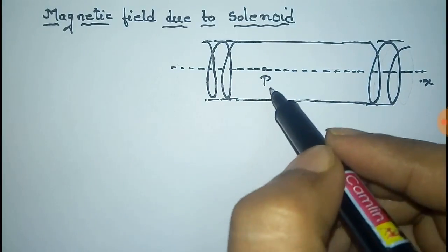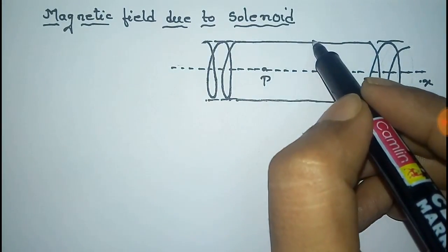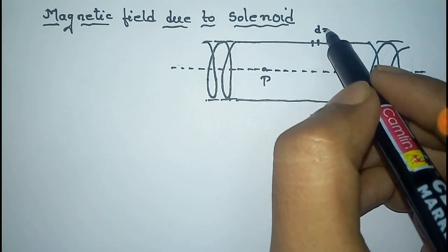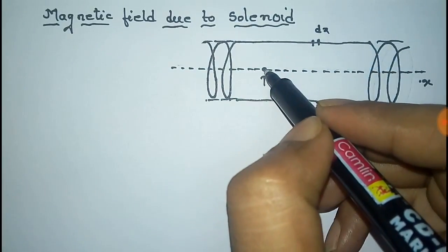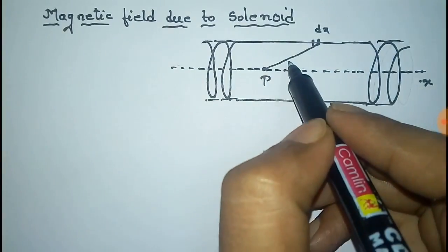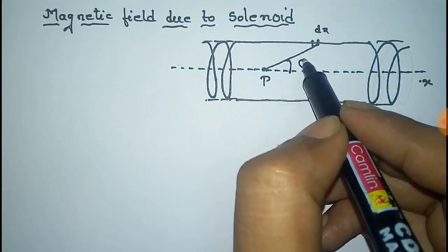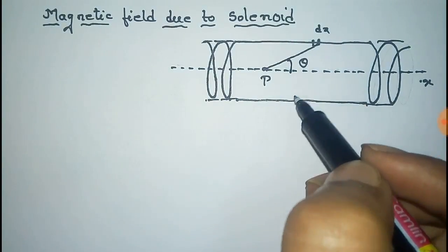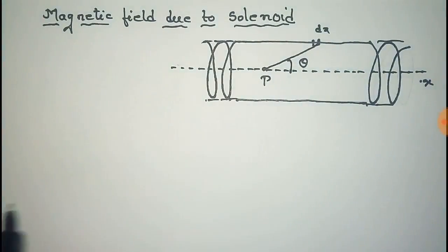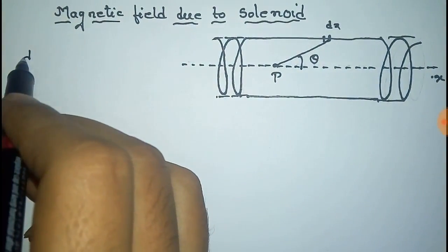Consider point P on the axis and consider a small distance dx over it. The angle between this and the axis is theta. Now we can easily find the magnetic field due to dx at P, that is dB.